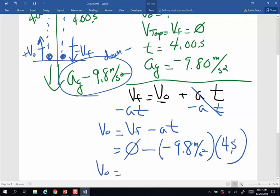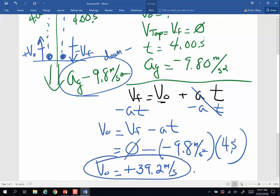So when I pick up my calculator, the negative sign is canceled. I'm going to end up with a positive 9.8 times 4, and that gives me 39.2 meters per second. It's going to be my original velocity upward.